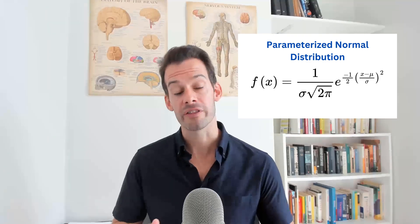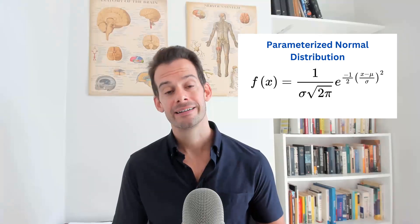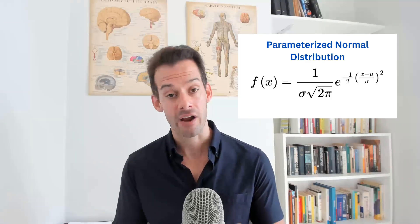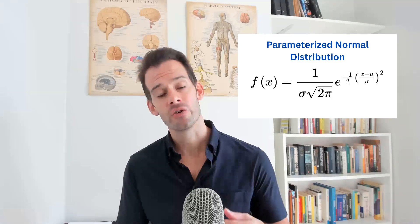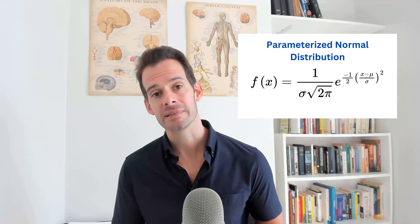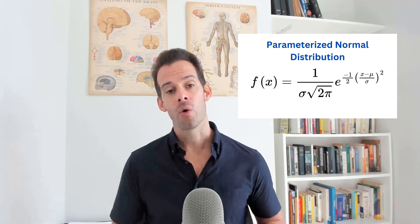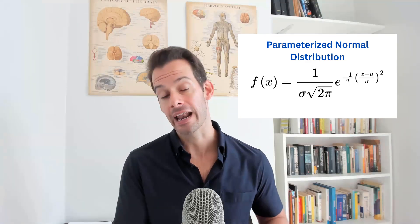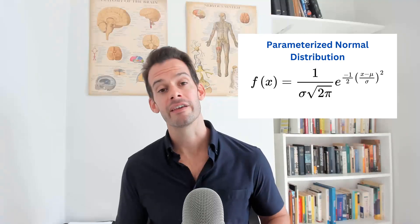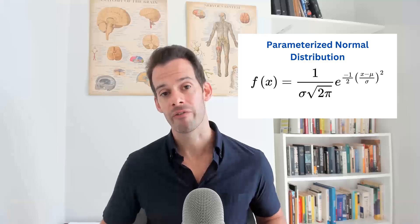The equation is: 1 over sigma times the square root of 2 pi, times e — Euler's number, approximately 2.718 — raised to the power of negative one-half times the quantity X minus the population mean divided by the standard deviation, squared. We put in our values, pick any possible value for X, and this tells us the height of the line at that point, allowing us to draw a perfectly smooth curve across the entire range of possible values for X.